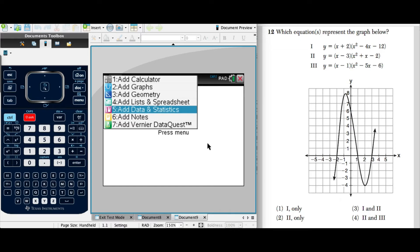And finally 3, Y equals X minus 1 times X squared minus 5X minus 6. And we have choices that include perhaps one or perhaps two of these graphs.